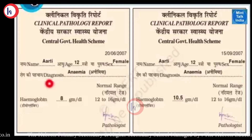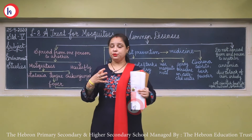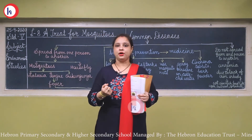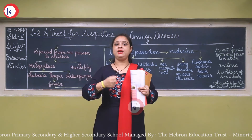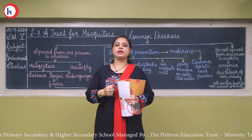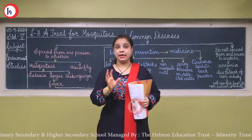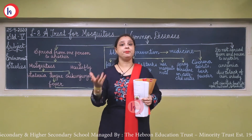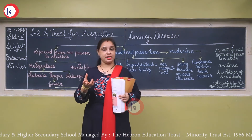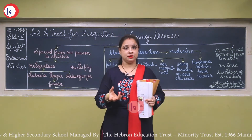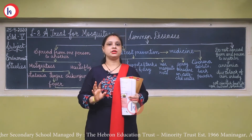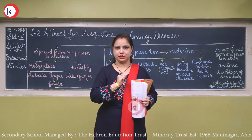In the second report, the hemoglobin has increased — now it is 10.5. So by eating good food, fruits, and vegetables, your hemoglobin will increase. You should eat more leafy vegetables like spinach and methi, and jaggery, which is very good for your body and for iron. The doctor will also give you some iron tablets.